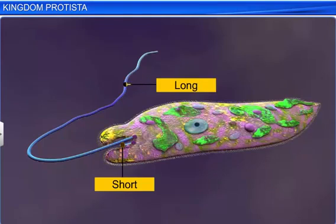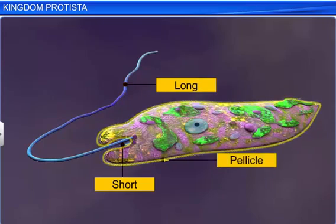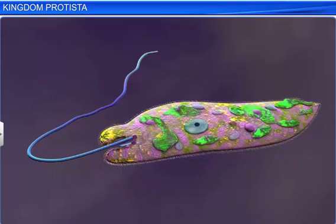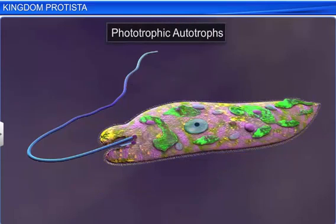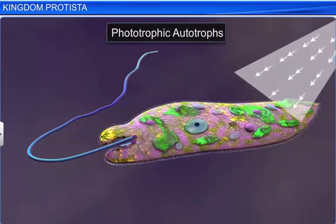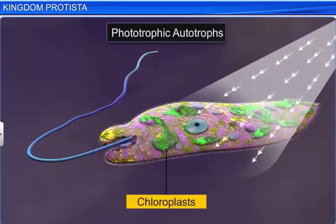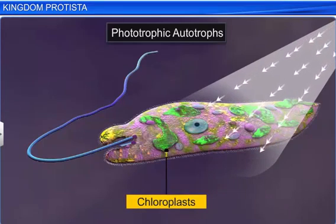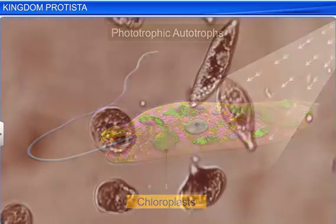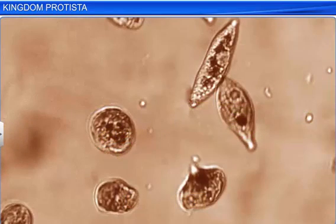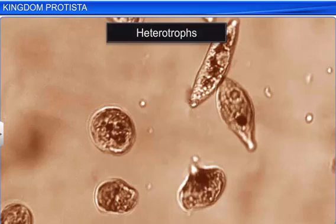Instead of a cell wall, Euglenoids have a protein-rich layer called pellicle that makes their bodies flexible. Euglenoids are phototrophic autotrophs in the presence of sunlight, since they also have chloroplasts like plants. However, they behave as heterotrophs in the absence of sunlight.